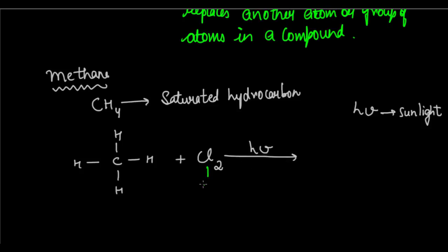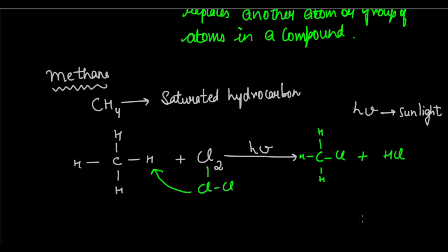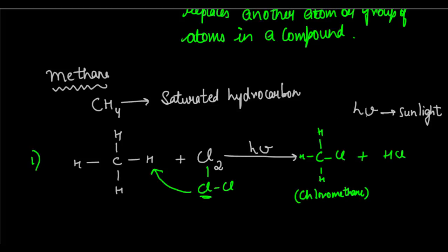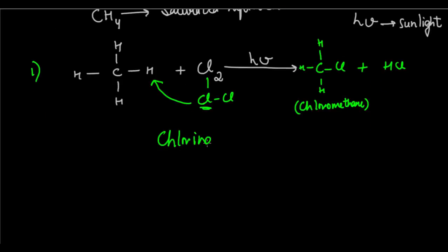One chlorine atom is going to replace one hydrogen. It will form CH3Cl plus HCl. This CH3Cl is chloromethane, and HCl gas is also produced. Here, one chlorine atom replaces a hydrogen in the presence of sunlight from a saturated hydrocarbon — it is substituting the position of hydrogen, and hence it is called a substitution reaction. This is a one-step substitution, and this process is called chlorination of methane.